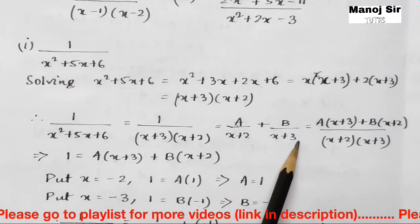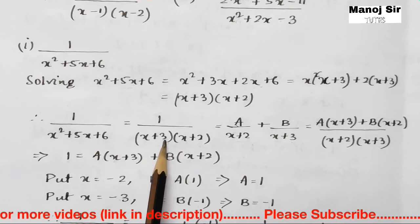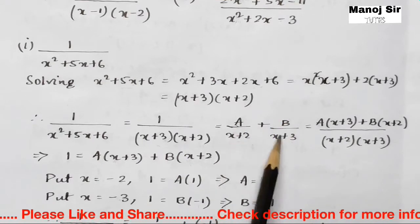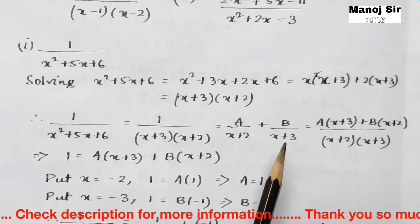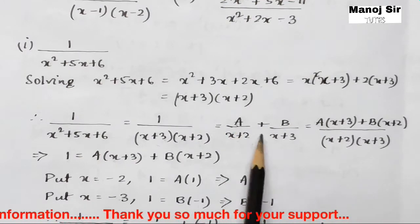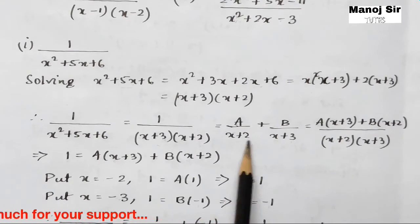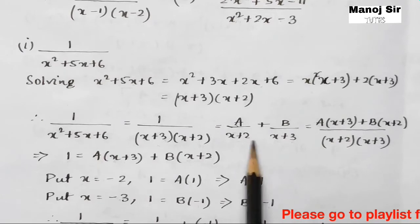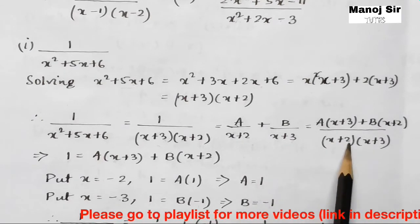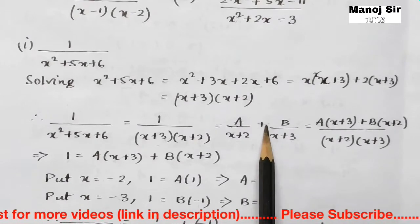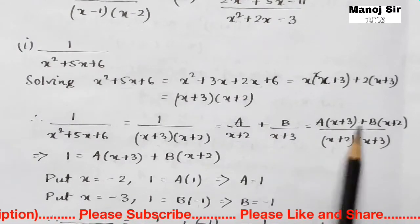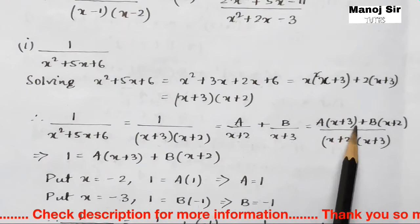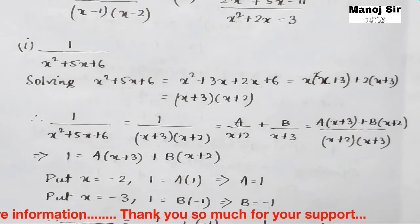This can be written as A upon (x+2) plus B upon (x+3). Note that the order is not mandatory — you can write B upon (x+3) plus A upon (x+2) and the end result will be the same. Now take the LCM, which is (x+2)(x+3). A will be multiplied with (x+3) and B will be multiplied with (x+2). Comparing numerators, we get: 1 = A(x+3) + B(x+2).